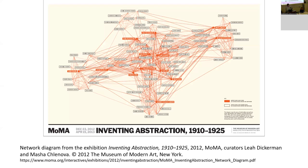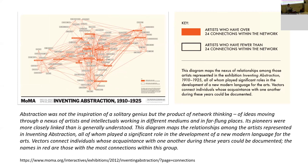This was the first thing a visitor would see upon entering the exhibition, and it was featured on the website in an interactive form — you could click on a particular node and see the connections of that particular person. It was featured in media articles with titles like "MoMA Creates Facebook for Abstractionists." While we could understand it as just another kind of embellishment like maps or chronological axes placed at the start of exhibitions, it seems more connected to the approach of the creators. As stated on the website: "Abstraction was not the inspiration of a solitary genius but a product of network thinking."